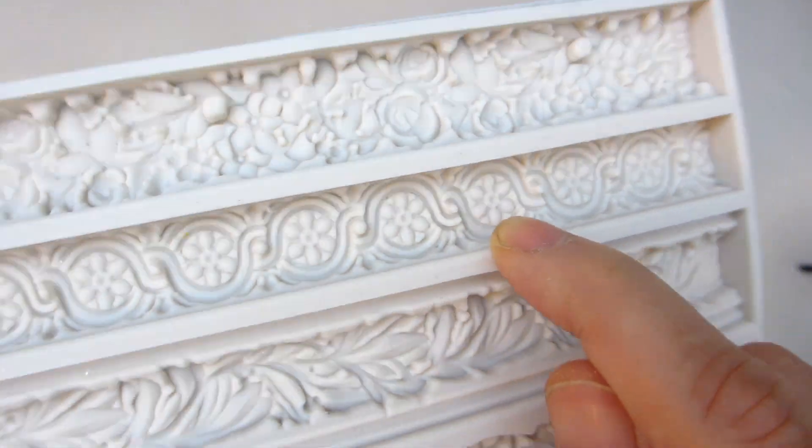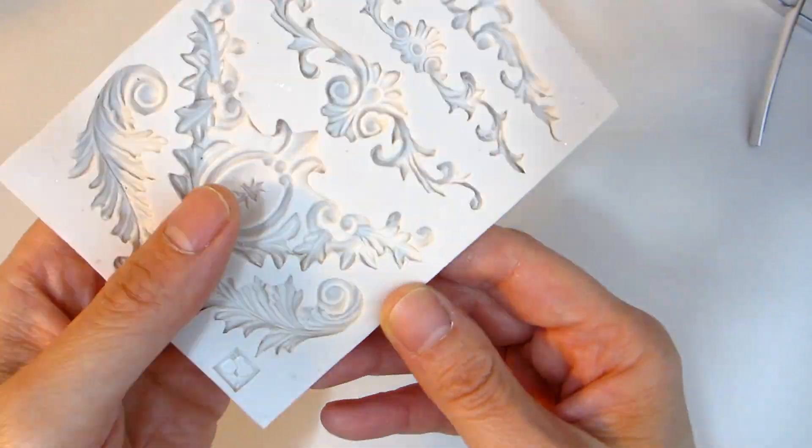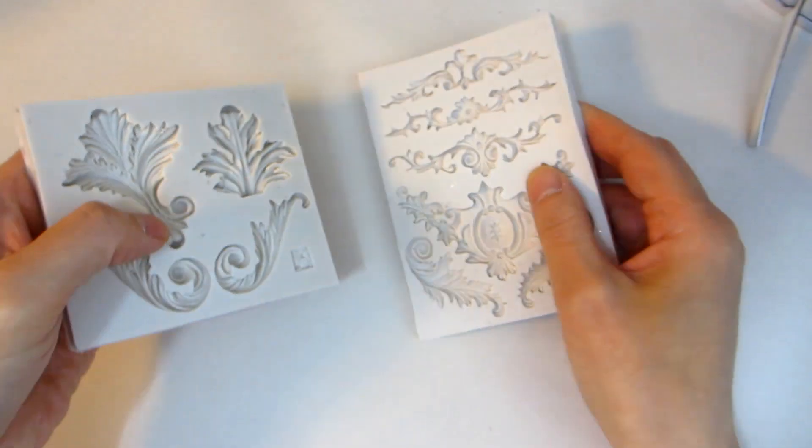This set of Baroque silicone molds come in three pieces, each with several different designs including scroll border, lace and patterns.